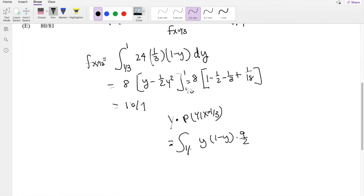So lower limits one third, upper limits one, DY. I'm going to take the constant outside, and I get Y squared one half, minus Y cubed one third, evaluated from one to one third.